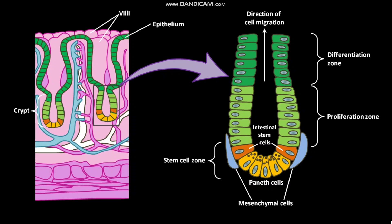Paneth cells secrete antimicrobial defense proteins called defensins. Defensins form pores in the bacterial membranes. As a result, bacteria face death.